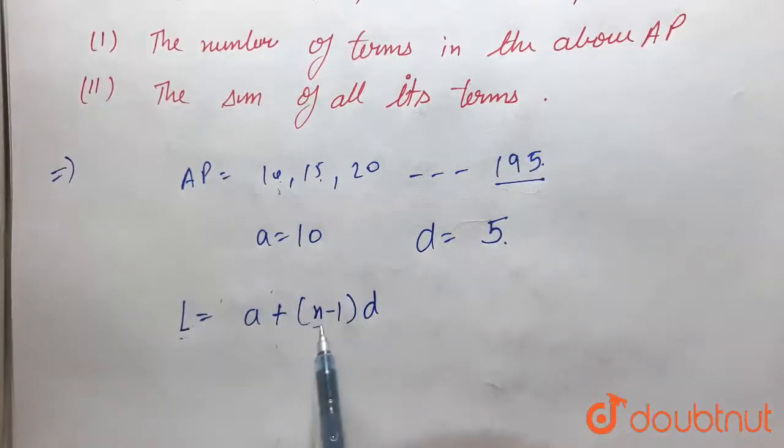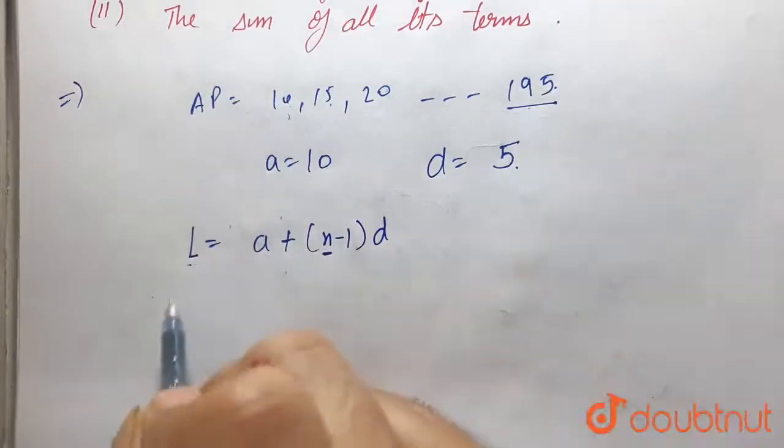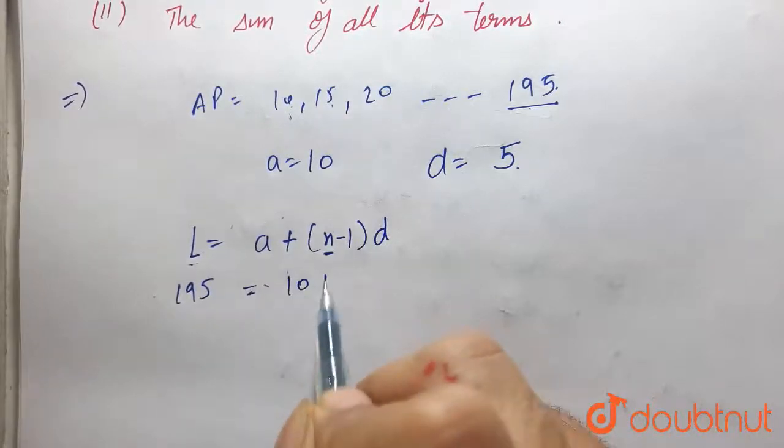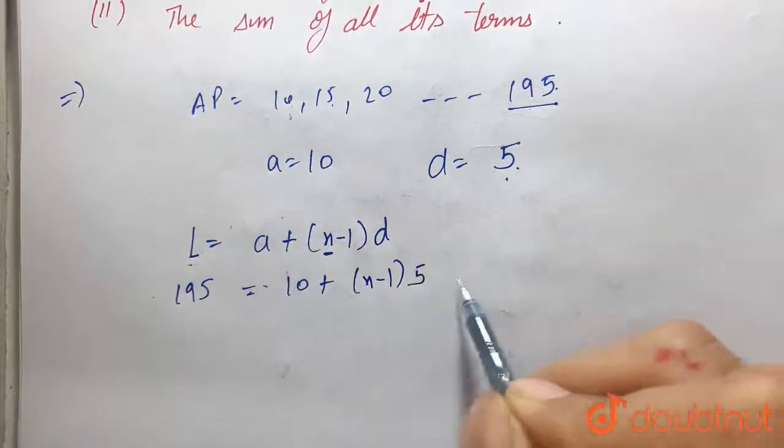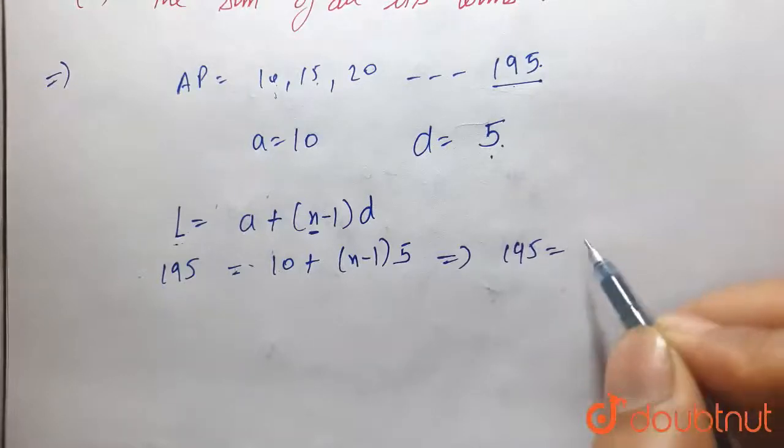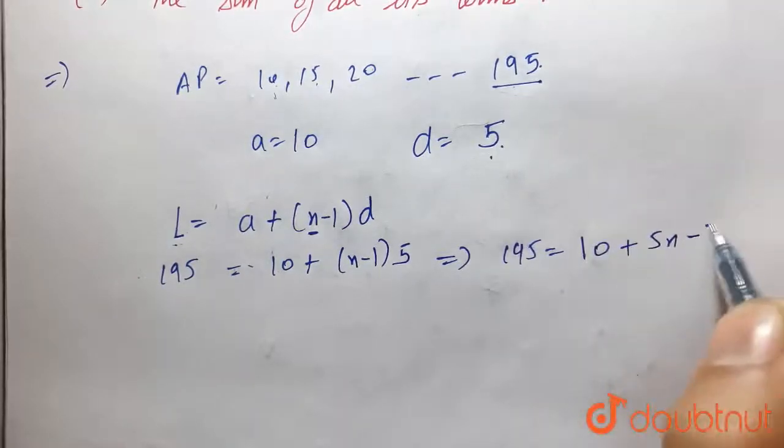Here the last term is given; we have to find n. So by putting the values, the last term is 195. So 195 is equal to 10 plus n minus 1 into d, that is 5, which equals 10 plus 5n minus 5.